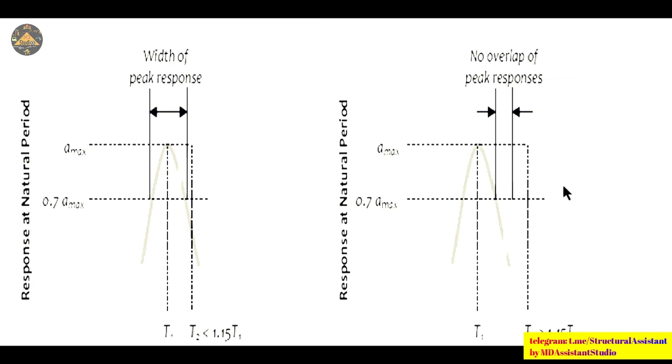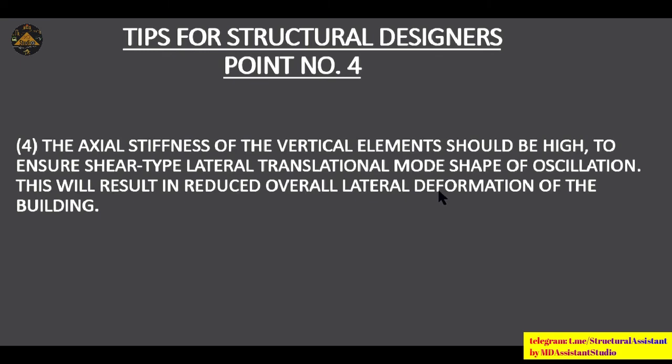Point number four: the axial stiffness of vertical elements should be high to ensure shear-type lateral deformation in the translational mode of oscillation. Shear-type lateral translational mode is always preferred to reduce the overall lateral deformation of the building.